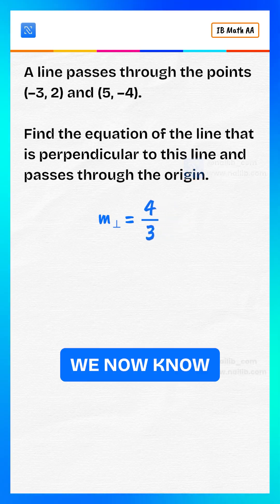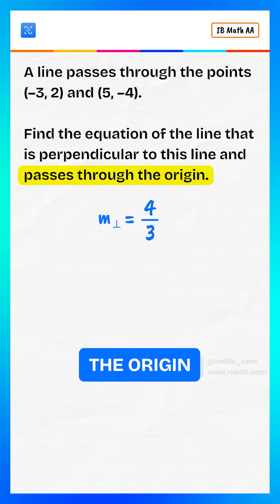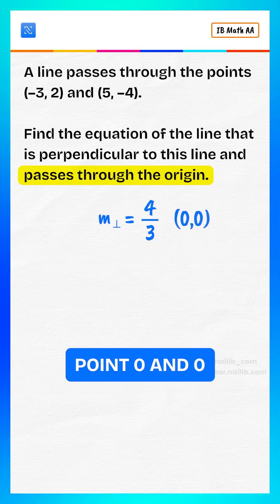We now know the slope is 4 divided by 3. The line passes through the origin, which is point 0 and 0.